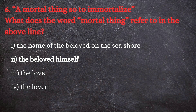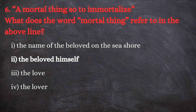The options are: the name of the beloved on the seashore; second, the beloved herself; third, the love; and fourth, the lover. The correct answer is the beloved herself. In the second quatrain of the sonnet, the beloved rebukes the lover for writing her name on the seashore, giving the reason that like that name on the sand, the beloved herself is subject to decay — one day time will take away everything, including herself.